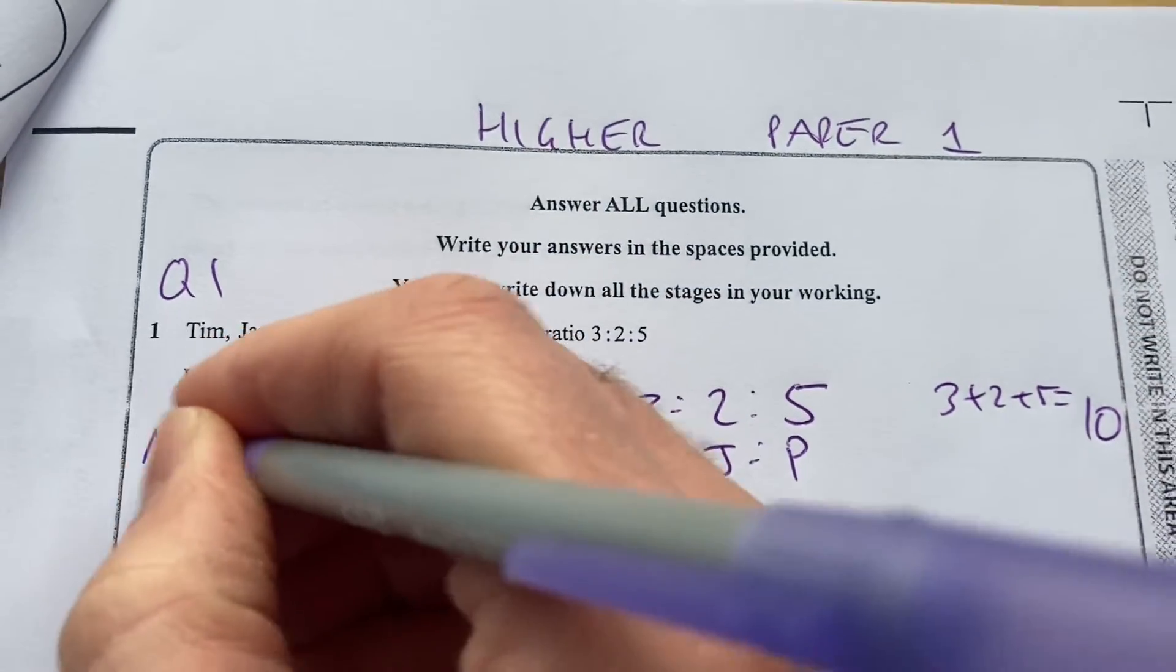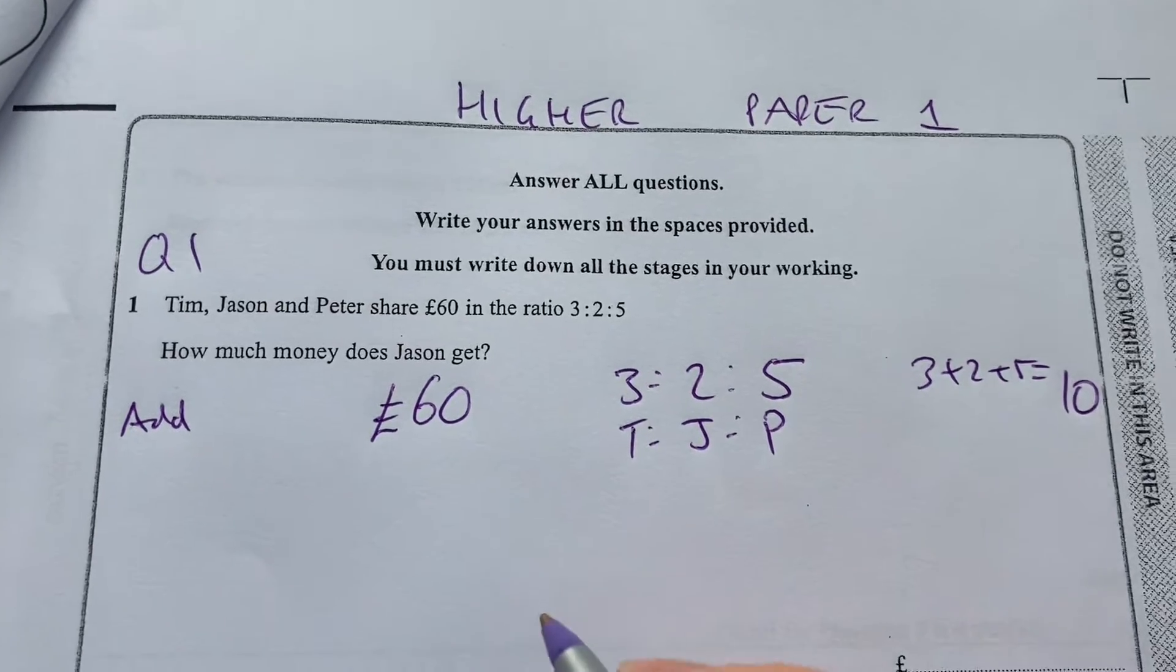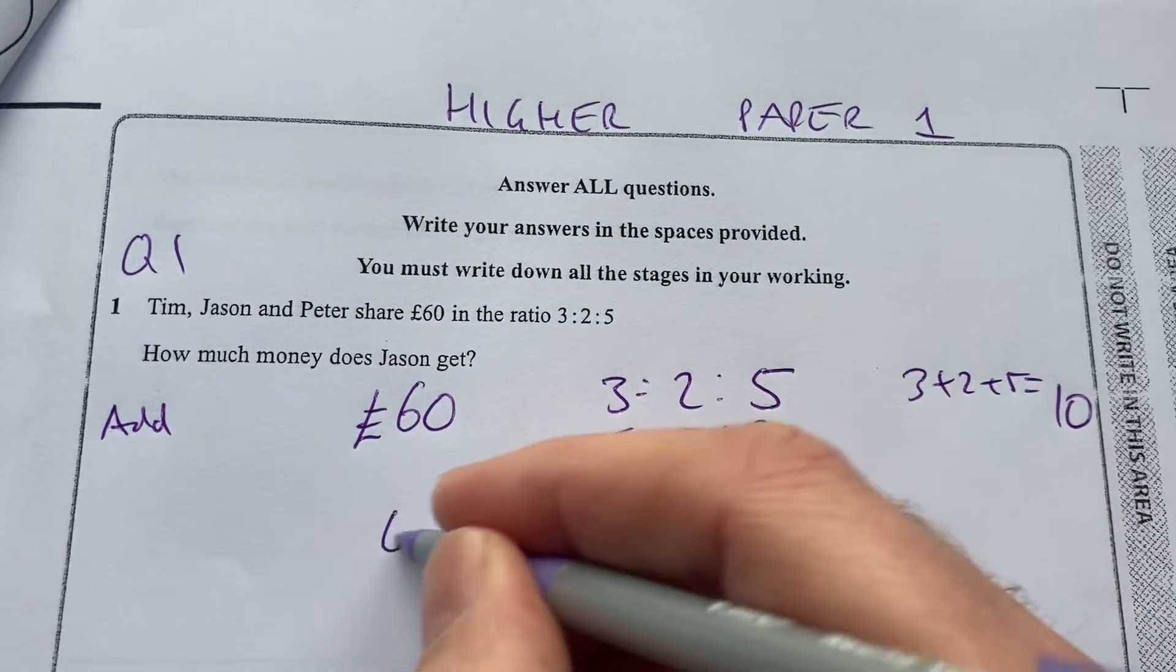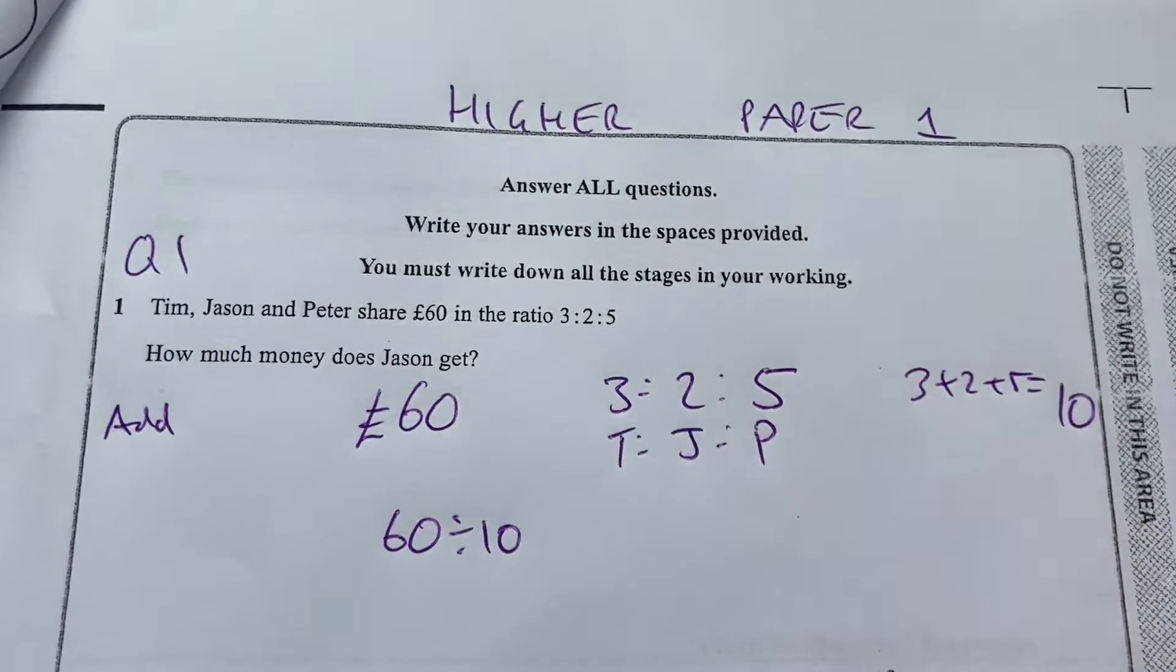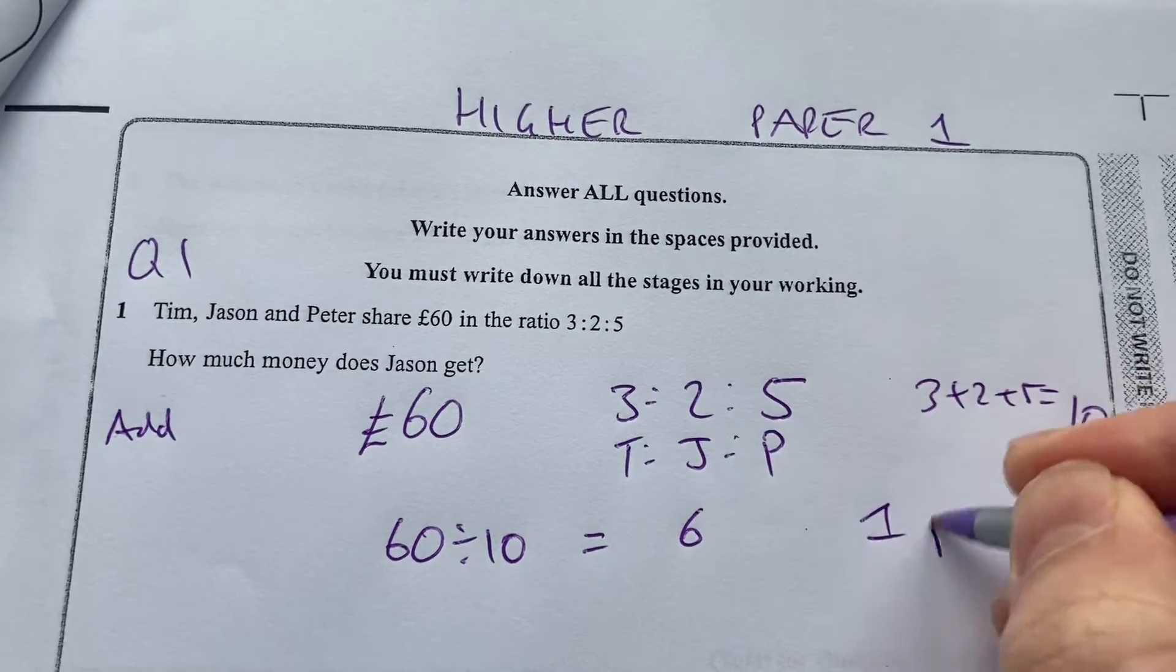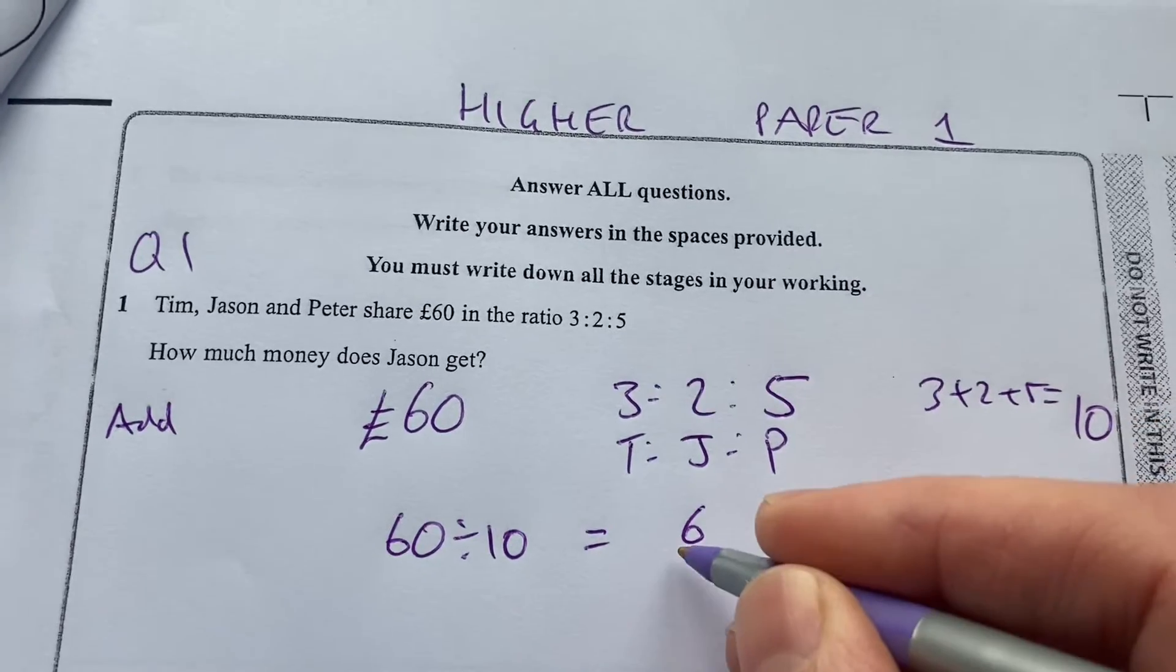Remember, you add, then you divide, and then you multiply. So 60 we're going to share into 10 parts to find out what one part is worth. So one part is worth £6.